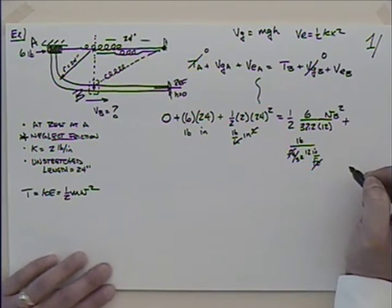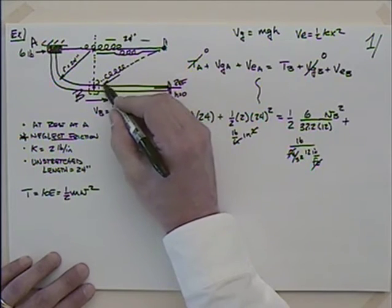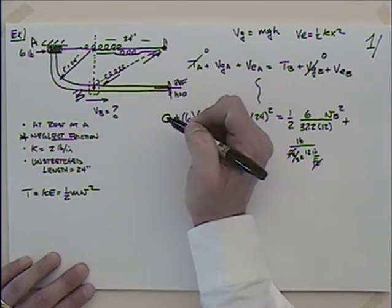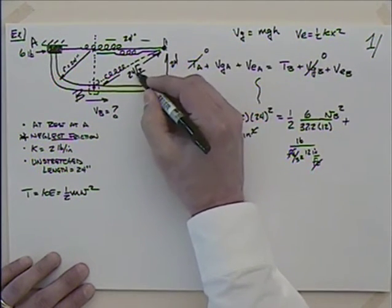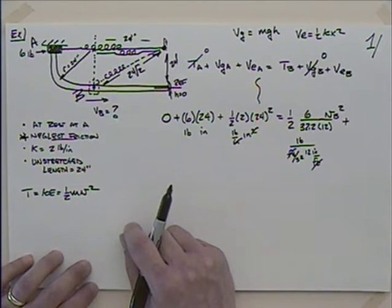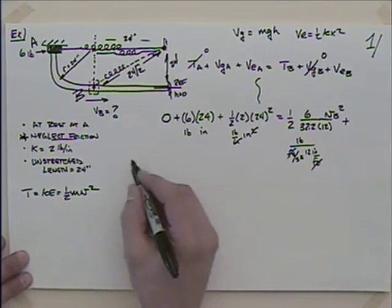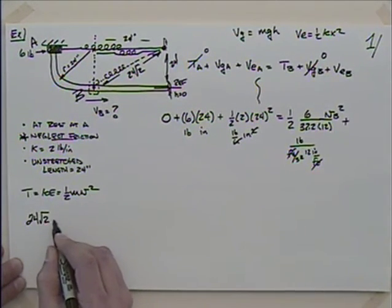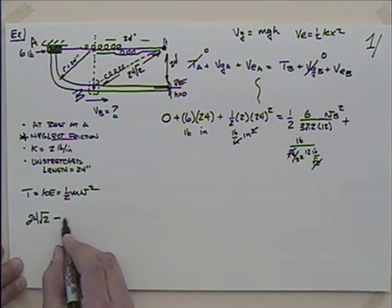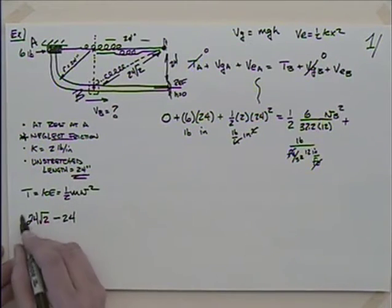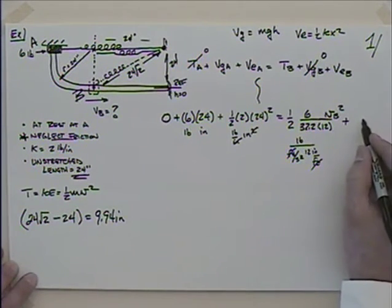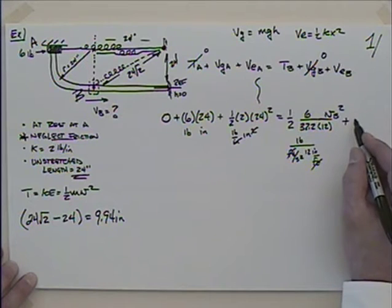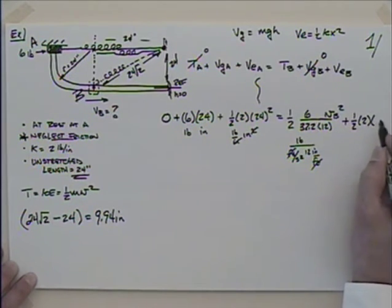For the spring energy at B, I need to find the stretch. If that distance is 24 and this is 24, then the total length is 24 times the square root of 2 — basic 45-degree triangle. Taking 24 times the square root of 2 as the total stretch and subtracting the initial unstretched length of 24 gives 9.94 inches. So the spring energy at B is one-half times 2 times 9.94 squared.